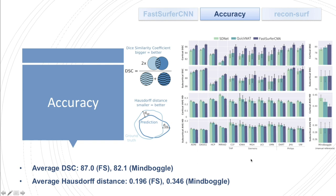This is also with respect to FreeSurfer as a reference, shown on the left for multiple datasets, as well as the manual standard on the right. On average, FastSurfer CNN reaches a DICE of 87 for FreeSurfer and 82.1 with respect to Mindboggle as a reference. The average Hausdorff distance is 0.196 with respect to FreeSurfer and 0.346 with respect to Mindboggle. Overall, FastSurfer CNN outperforms other deep learning architectures by a significant margin and generalizes well across different disease states, age groups, and scanner types.